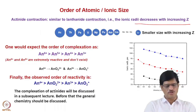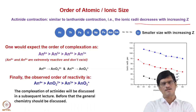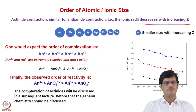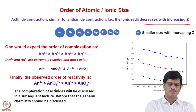Actinide ionic species come in different types. Considering that actinides have oxidation states from plus 3 to plus 6, which are the very commonly available oxidation states, a plus 6 oxidation state will definitely form a stronger complex than plus 5, which will form a stronger complex than plus 4, which will form a stronger complex than plus 3.